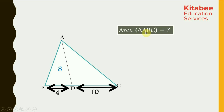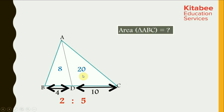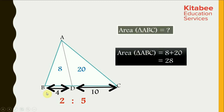We have to find out the area of triangle ABC. BD and CD are 4 and 10, so ratio of BD to CD is 2 is to 5. Thus, BD and DC are in the ratio of 2 is to 5, so areas should also be in the ratio of 2 is to 5. Area of triangle ABD to area of triangle ADC must be in the ratio of 2 is to 5. Thus, area of triangle ADC is equal to 20. Area of triangle ABC, this entire triangle, would be equal to 8 plus 20, which is 28 units.